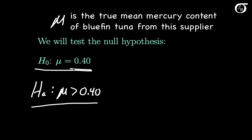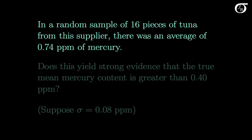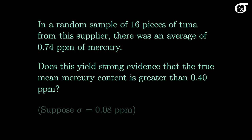Note that if we reject this null hypothesis in favor of the alternative, we would also reject any value less than that. Some sources write the null hypothesis as mu less than or equal to 0.40, but in the end we do have to test a single value. In a random sample of 16 pieces of tuna, the average mercury was 0.74 parts per million. Does this yield strong evidence that the true mean is greater than 0.40? Suppose the population standard deviation sigma is known to be 0.08 parts per million — in the real world sigma is usually unknown, but let's assume we know it here.